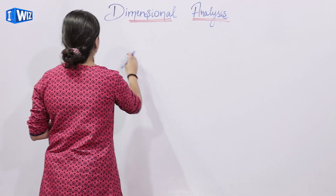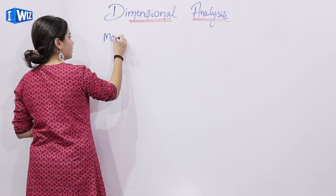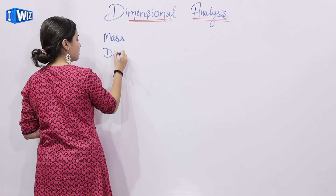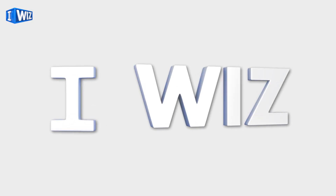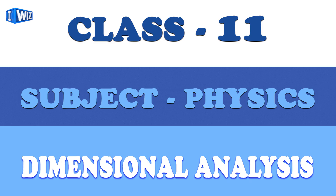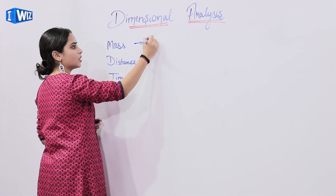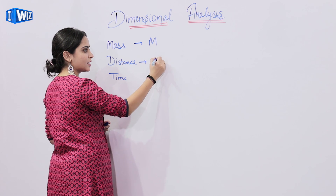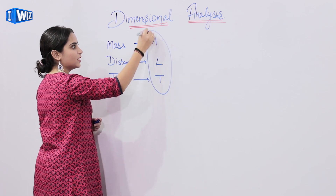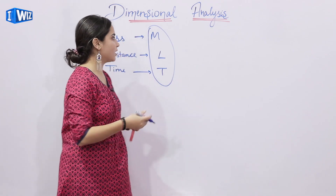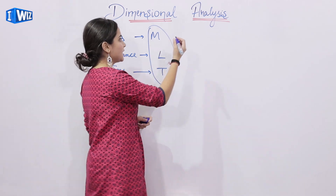Hello everyone, my name is Sumedha and in this lecture we will study about dimensional analysis. In dimensional analysis we have three fundamental terms: mass, distance, and time. Mass is denoted by capital M, distance is denoted by L, and time is denoted by T. We will define every equation in terms of M, L, and T. So let's start.